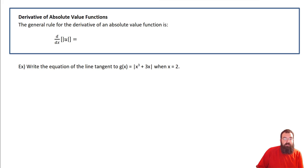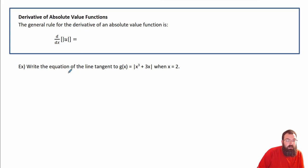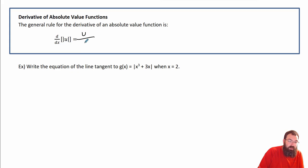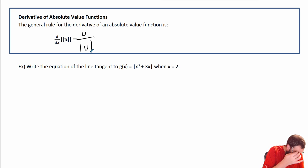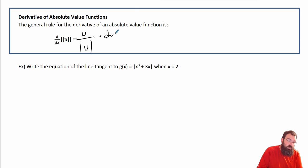The general rule for the derivative of an absolute value function: we take the u value and divide it by the absolute value of u, times the derivative of u — u prime.